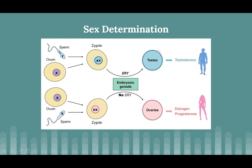The SRY protein causes the development of testes — the male gonads — which are sex glands that produce gametes or sex cells, and subsequently sex hormones, leading to biological gender formation. This happens when the SRY gene is present, encoded by the XY chromosomes in the embryonic gonads. For females, it's the exact opposite: there is no sex-determining region Y gene and no SRY protein, so the testes-determining factor isn't present. Instead, ovaries develop and produce female sex hormones such as estrogen and progesterone, as opposed to male testosterone.